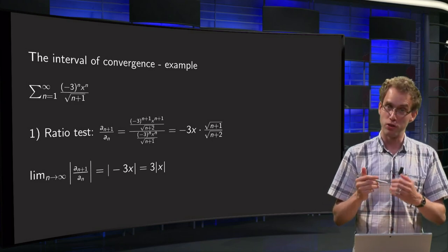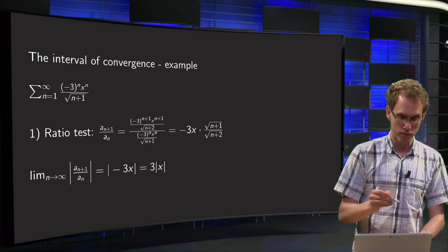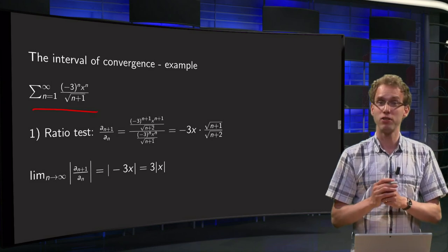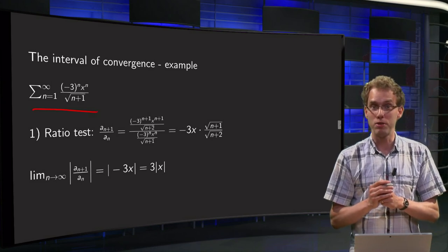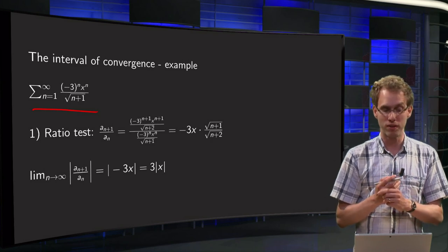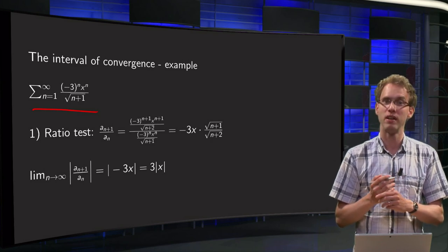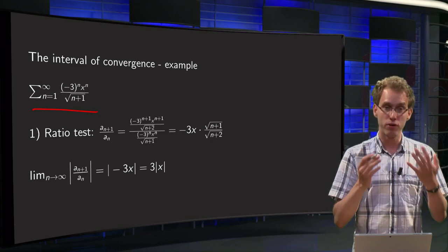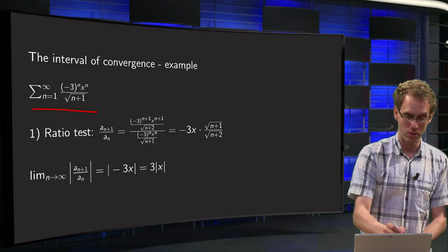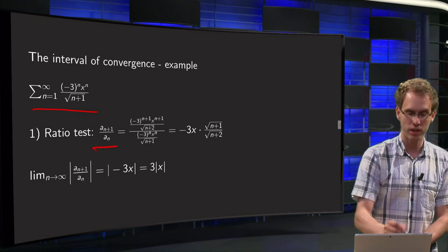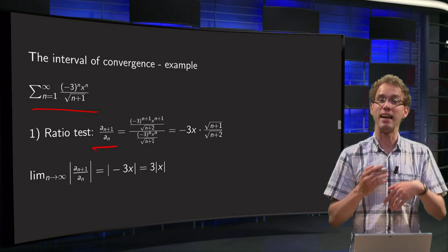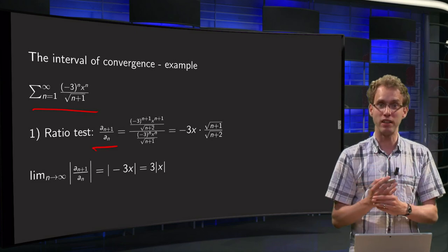Determine the interval of convergence of the power series: minus 3 to the power n times x to the power n divided by the square root of n plus 1. First, always use the ratio test, so you compute a_{n+1} over a_n and then simplify.